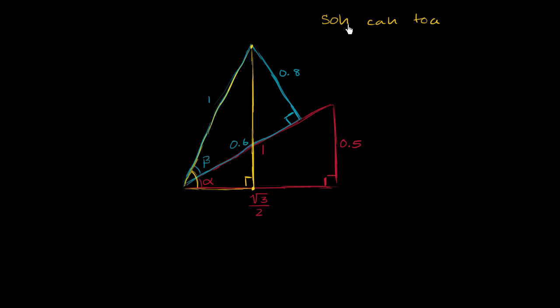And we know that sine is opposite over hypotenuse. So if we're considering alpha plus beta, this angle right over here, opposite over hypotenuse, that's going to be this length over the hypotenuse, which is one. So sine of alpha plus beta is going to be this length right over here. So that seems interesting.